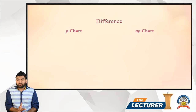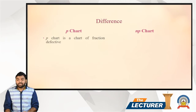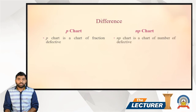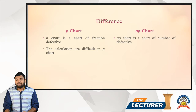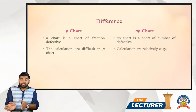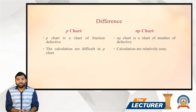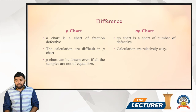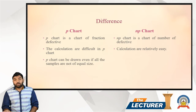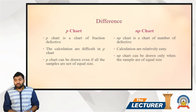Now let's see some points of difference between p-chart and np-chart. The p-chart is a chart of fraction defective, while the np-chart is a chart of number of defectives. Calculations in the p-chart are slightly difficult, but in the np-chart calculations are relatively easy compared to the p-chart. Also, the p-chart can be drawn even if all the samples are not of equal size, whereas the np-chart can be drawn only when the samples are of equal size.